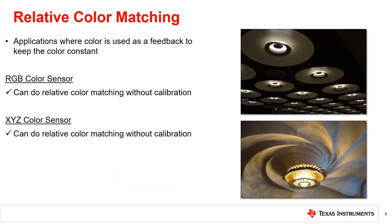There are many applications, such as overhead lighting color control, where a color sensor is simply used as feedback to keep the color constant. These applications are an example of relative color matching. For example, light sources such as LEDs change color under different conditions, such as temperature, driver current, PWM dimming, and aging. Many lighting systems add blue and/or red LEDs to offset any changes in color from the white LEDs. If the color sensor shows that the color point has shifted from the original factory calibration, the colored LEDs are added until the factory calibration and the color sensed match again.